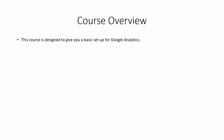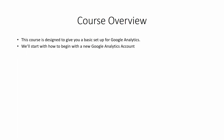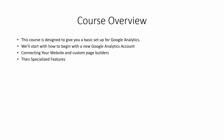Hello and welcome. In this course, you are going to receive a tutorial on a basic setup of Google Analytics on your site. We'll start with how to begin with a new Google Analytics account, connecting your website, custom page builders, or even your WordPress site. Then we'll be walking through some of the specialized features of Google Analytics, such as setting up annotations so that you'll know how your site is performing at a glance. We'll be setting up intelligence events so that you can have emails sent to you when certain things happen on your site.